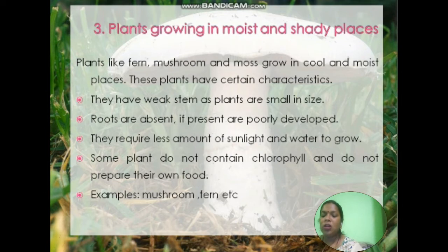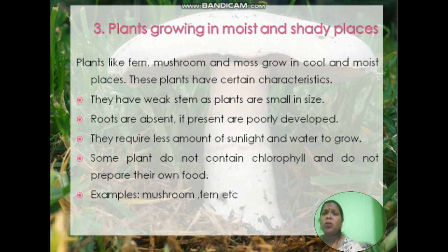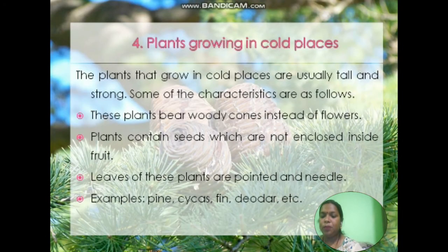These plants have certain characteristics: they have weak stems and are very small in size. Roots are absent or, if present, are poorly developed. They require very little sunlight and water to grow. Some plants do not contain chlorophyll and do not prepare their own food. Examples include mushroom and fern.